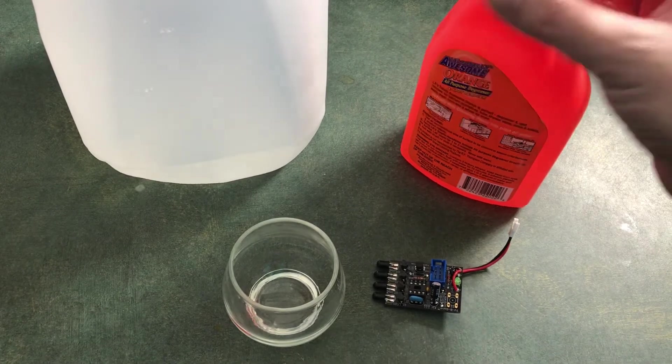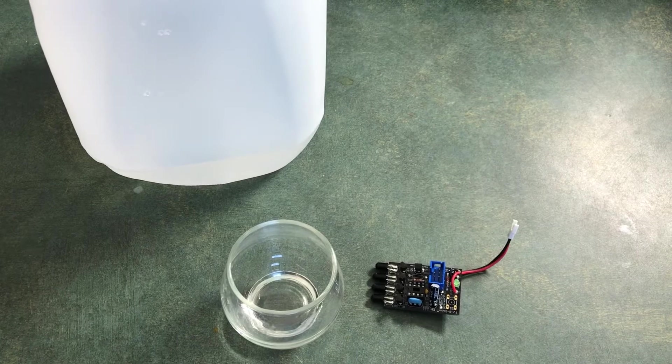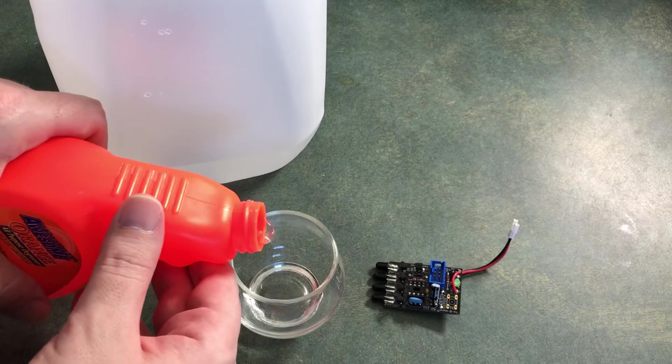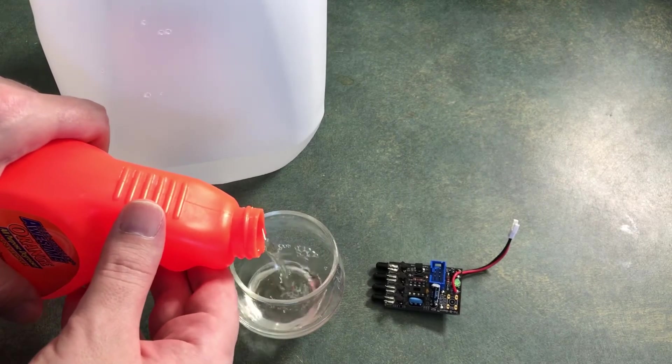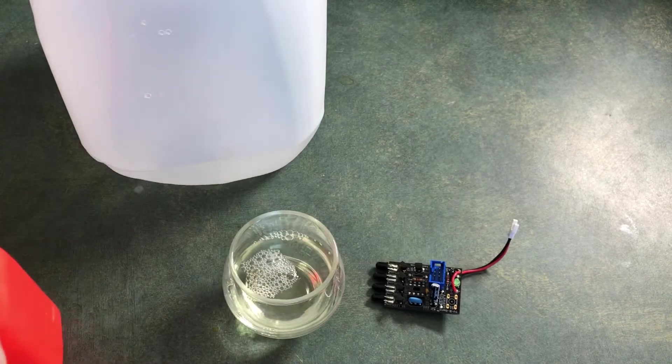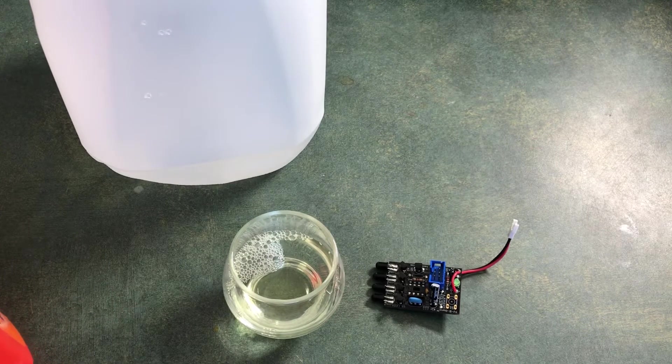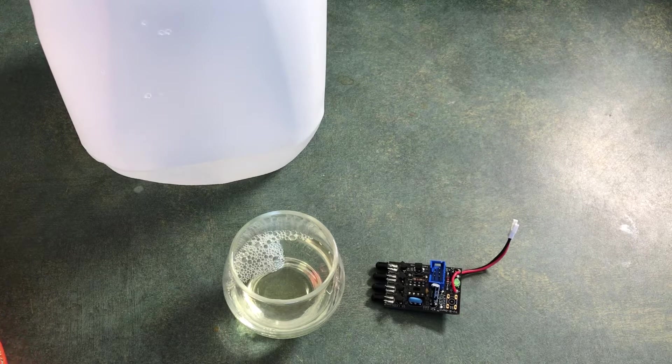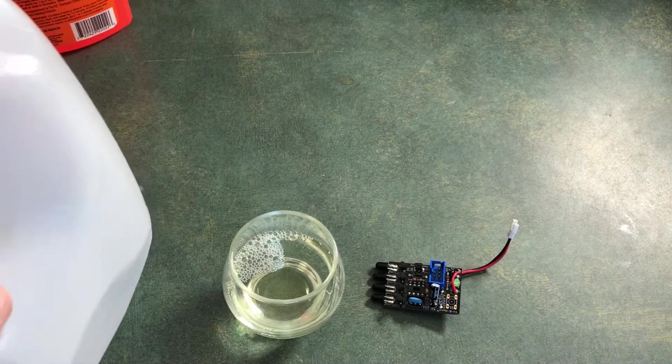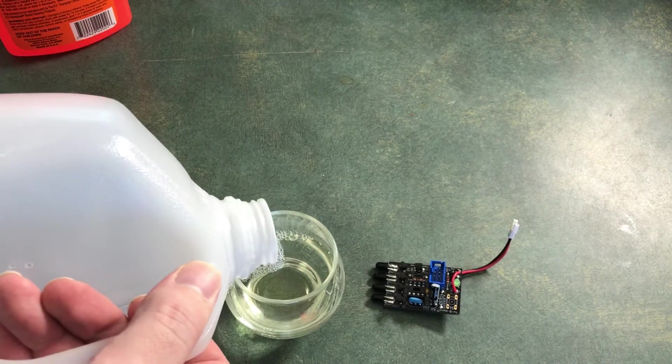So you want to pour in your degreaser. You want to mix this in maybe anywhere between a 10 and 50% solution. If you're doing this in an ultrasonic cleaner, then use a little less, close to 10%. If you're doing this the way I'm about to do it, then go 50-50. And then pour in your distilled water for the remainder.